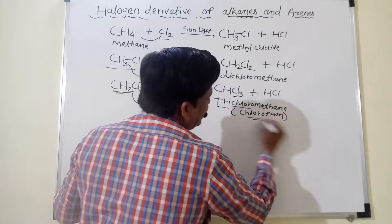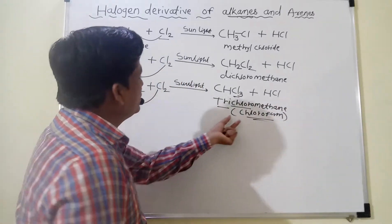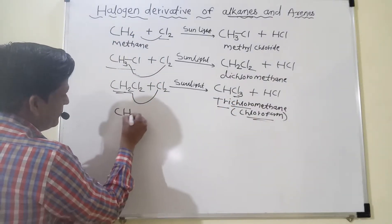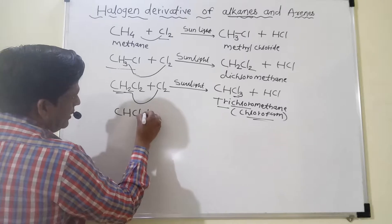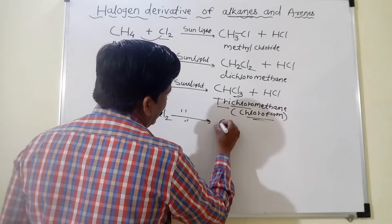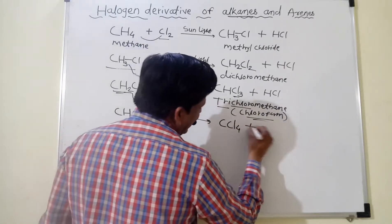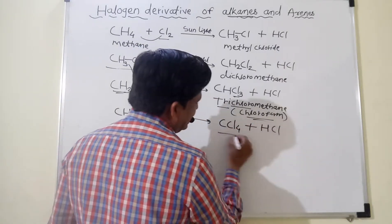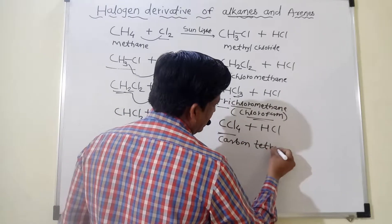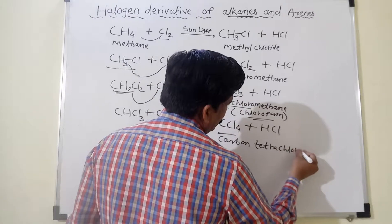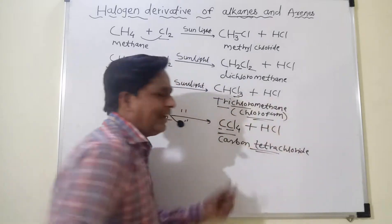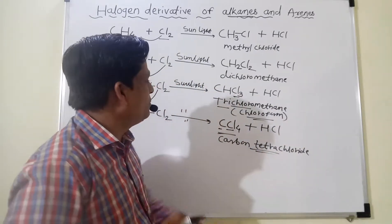Chloroform is used as an anesthetic. Again, there is one hydrogen atom remaining, so CHCl3 reacts with Cl2 in presence of sunlight, and here we get CCl4 plus HCl. This is carbon tetrachloride. The carbon has four Cl atoms attached, that is why it is tetrachloride.